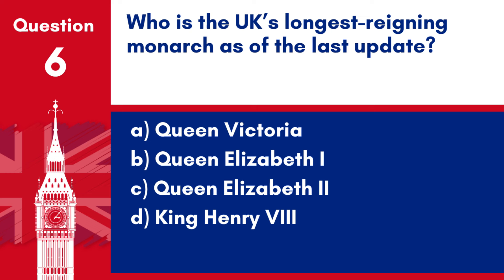Question 6. Who is the UK's longest reigning monarch as of the last update? a. Queen Victoria. b. Queen Elizabeth I. c. Queen Elizabeth II. d. King Henry VIII.